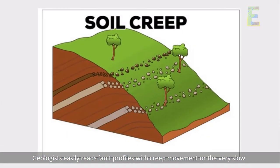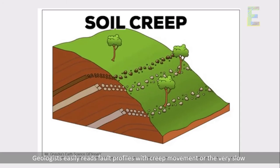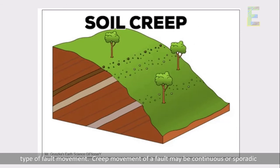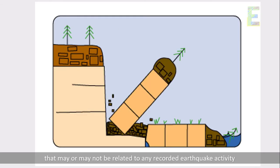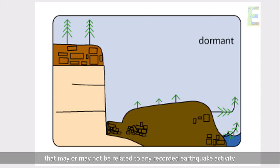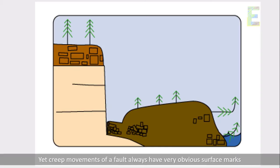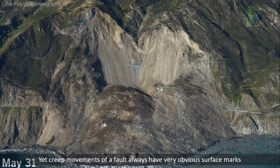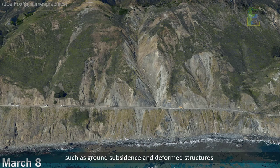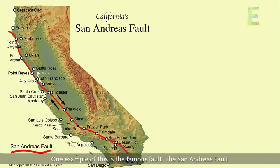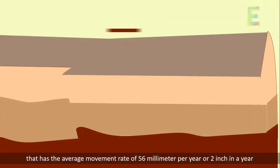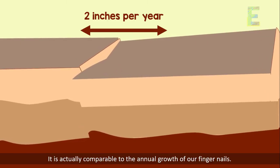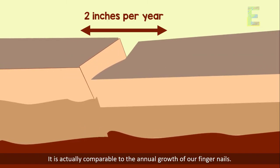Geologists easily read fault profiles with creep movement, or the very slow type of fault movement. Creep movement of a fault may be continuous or sporadic, and may or may not be related to any recorded earthquake activity. Yet creep movements of a fault always have very obvious surface marks such as ground subsidence and deformed structures. One example of this is the famous San Andreas fault, which has an average movement rate of 56 mm per year, or 2 inches in a year — actually comparable to the annual growth of our fingernails.